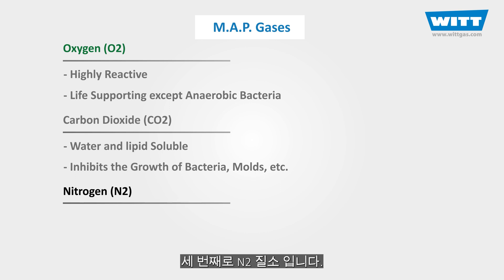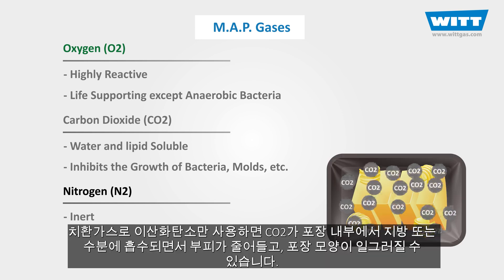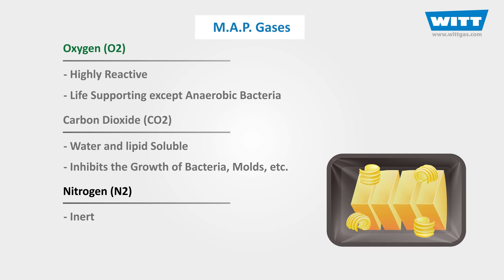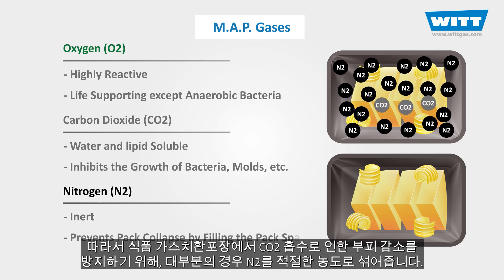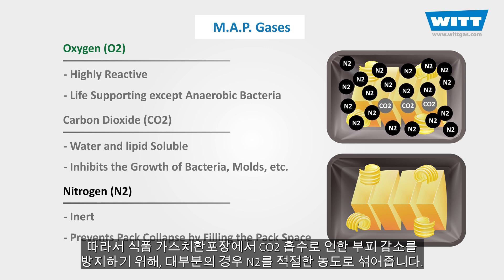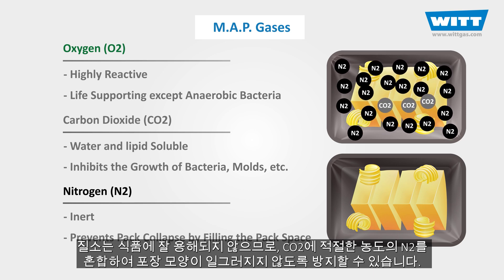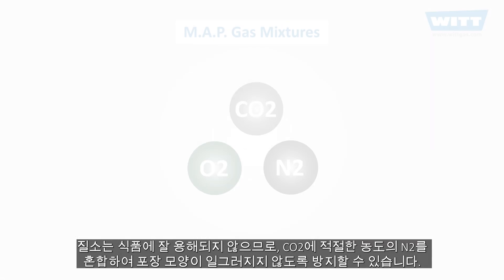The last gas is nitrogen (N2). Nitrogen is a relatively unreactive gas with no odour, taste, or colour. Using carbon dioxide alone can lead to a volume decrease due to CO2 going into solution. So for many food products, CO2 requires a second gas to balance this volume decrease, and that gas is nitrogen. The low solubility of nitrogen in foods can be used to prevent pack collapse by including enough of it in the gas mixture.